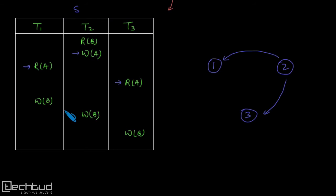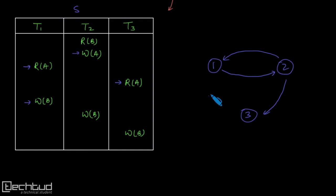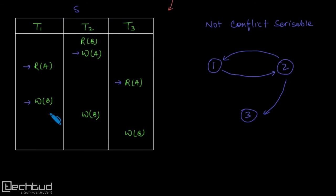R(A) has no further conflict because there is no additional W(A). Now, W(B) has a conflict with another W(B) because they work on the same data item, at least one operation is a write, and they belong to different transactions T1 and T2 — so we draw an edge from T1 to T2. The moment we draw that edge from T1 to T2, it forms a cycle, which means the schedule is not conflict serializable. This conflict was caused by these two write operations.